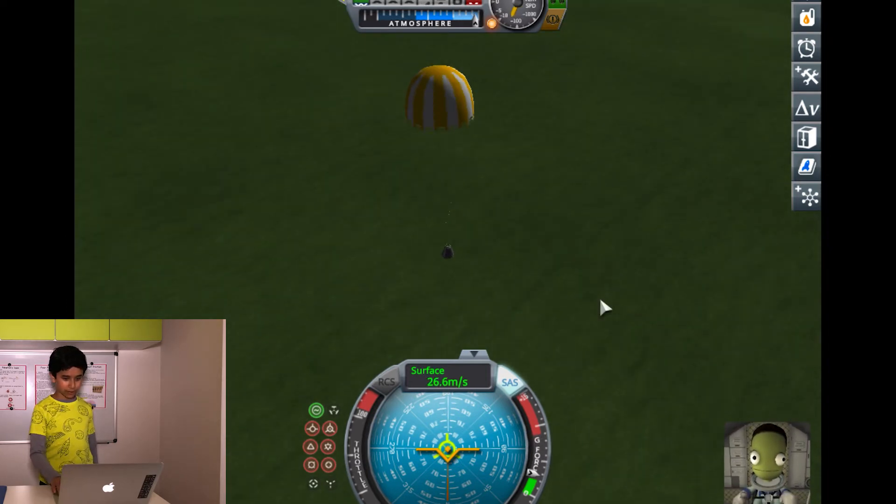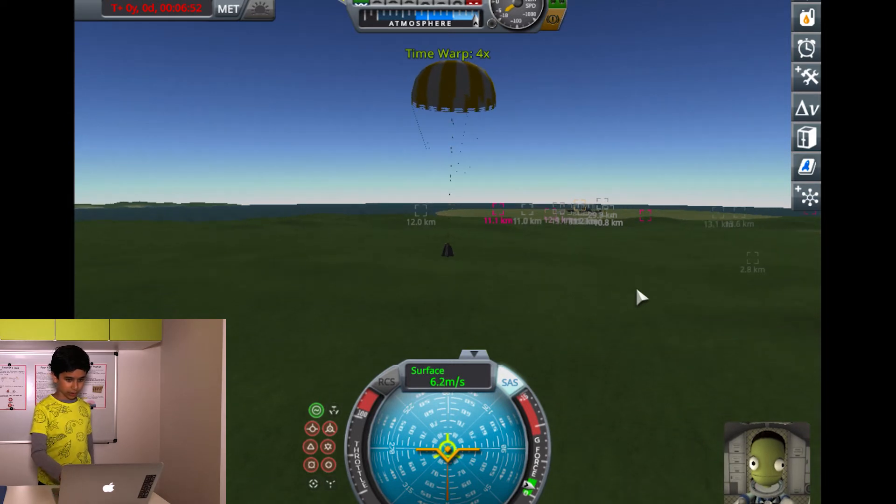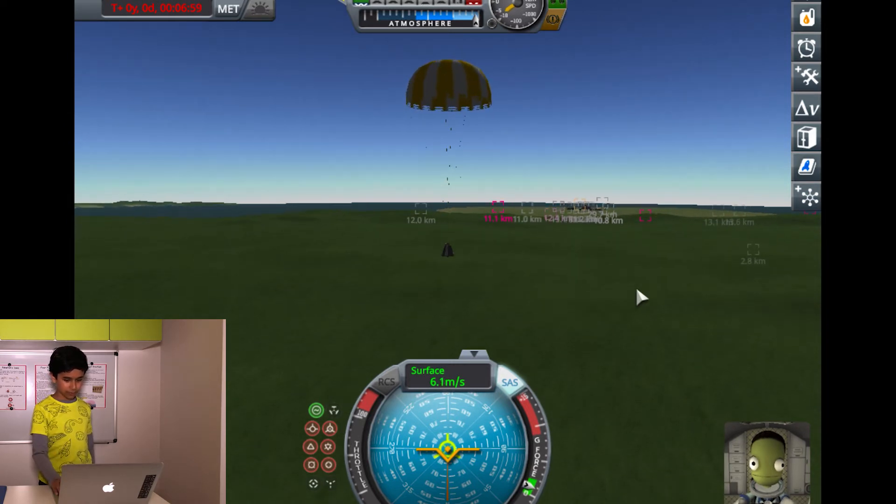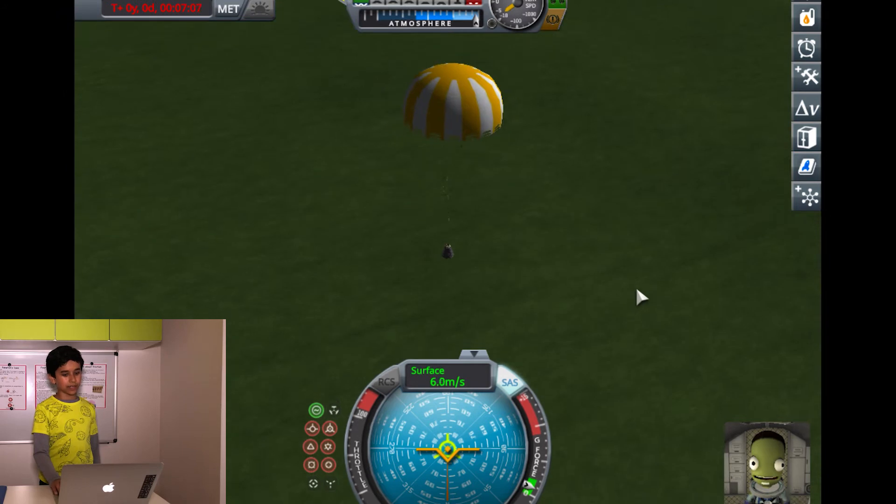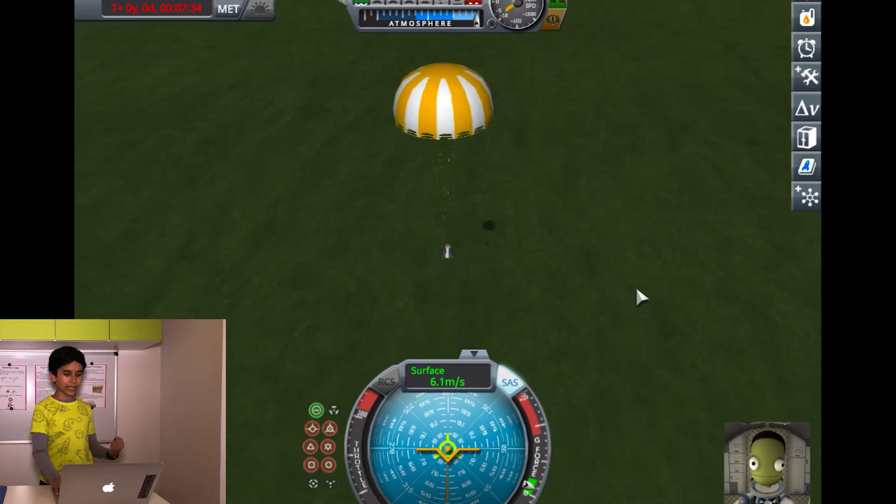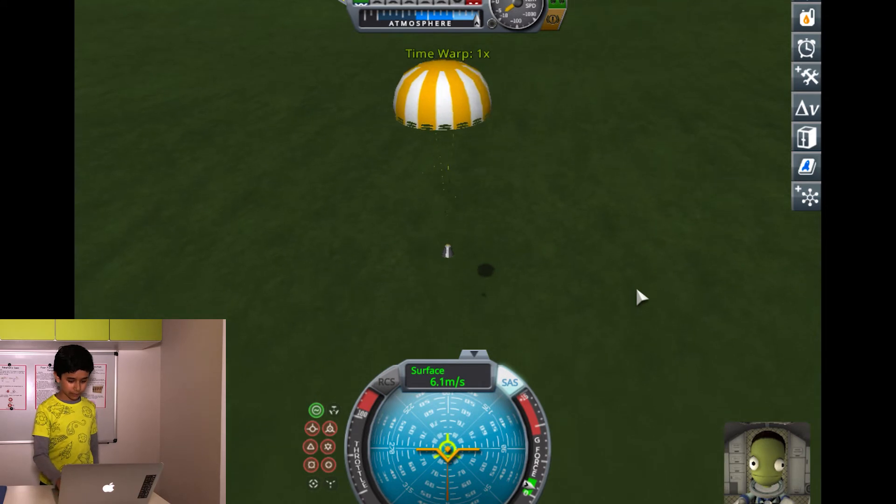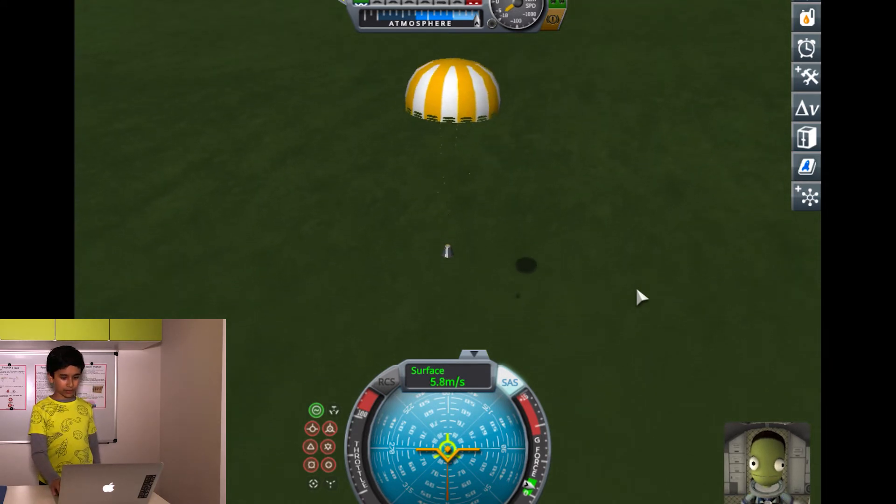We're slowing down considerably because of the friction. And now I'm just going to warp a bit. We're going in a nice and comfortable 6 meters a second. And the shadow has appeared. We see a shadow. I'm just warping right now. And now we should land soon. 100 meters. 90. 80. 70. 60. 50. 40. 30. 20. 10.